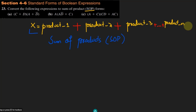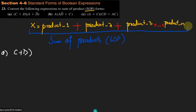This is called the sum of products. We have to convert each expression here to the sum of product expression. For part (a), we have (c + d) multiplied by (a + d prime).